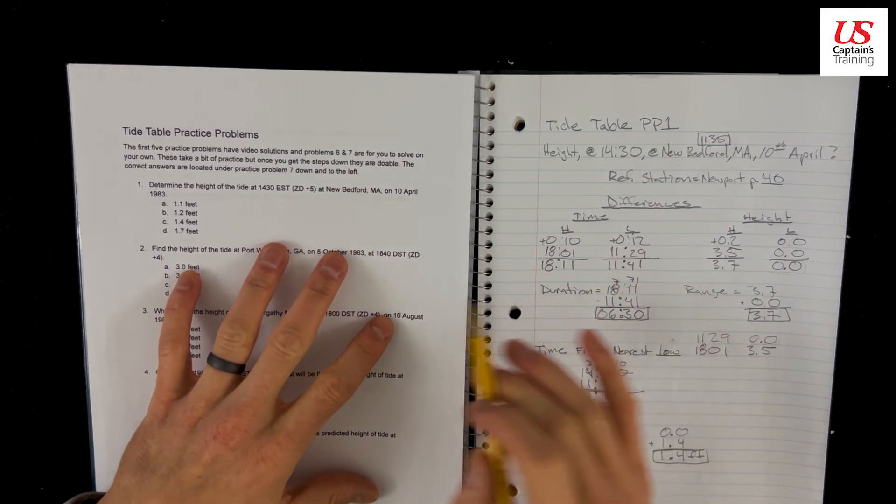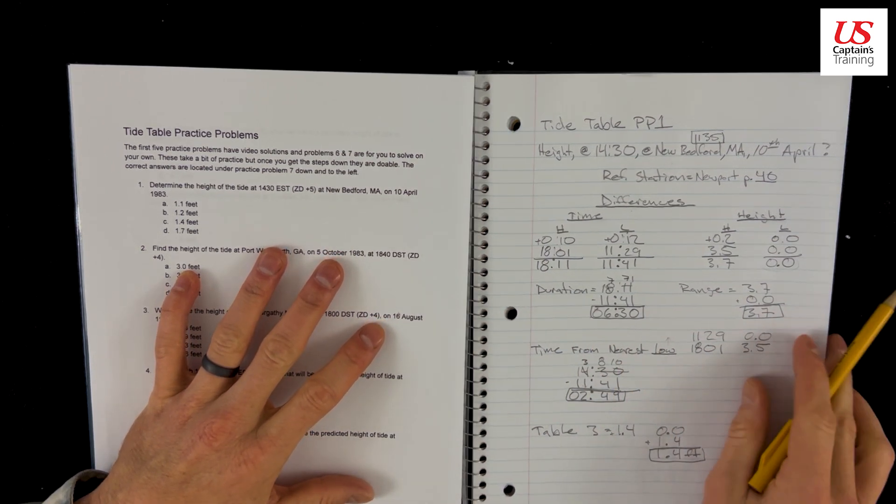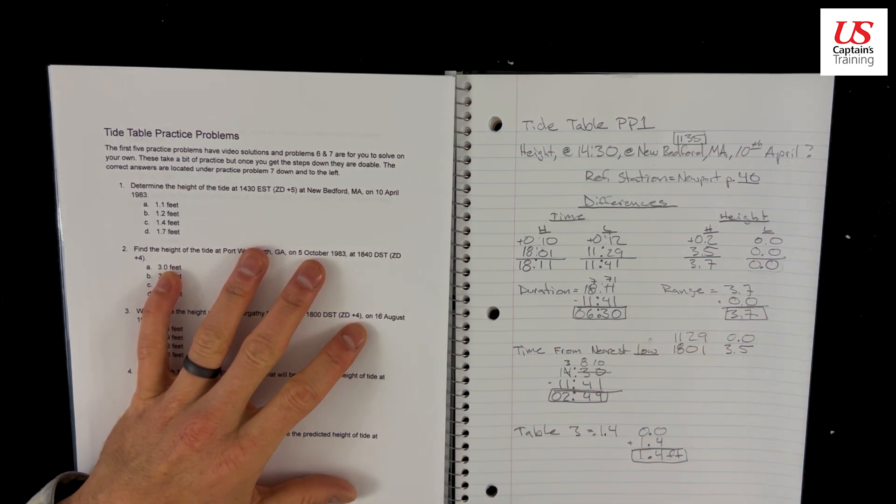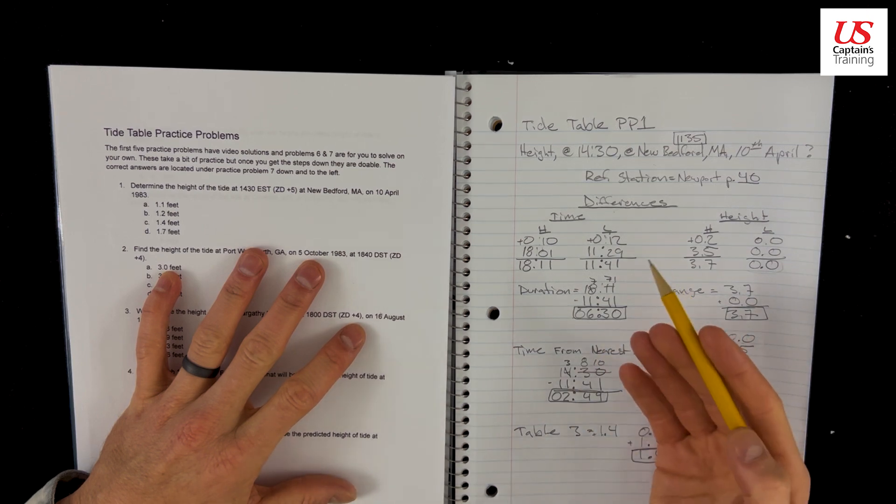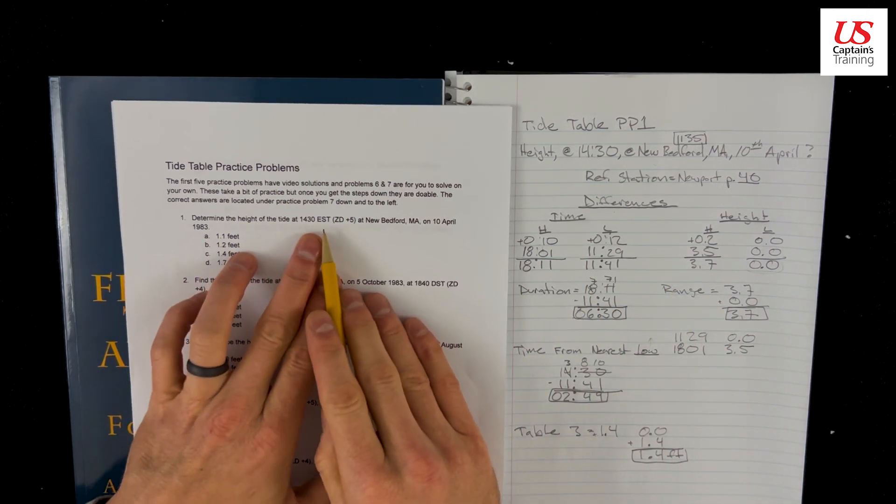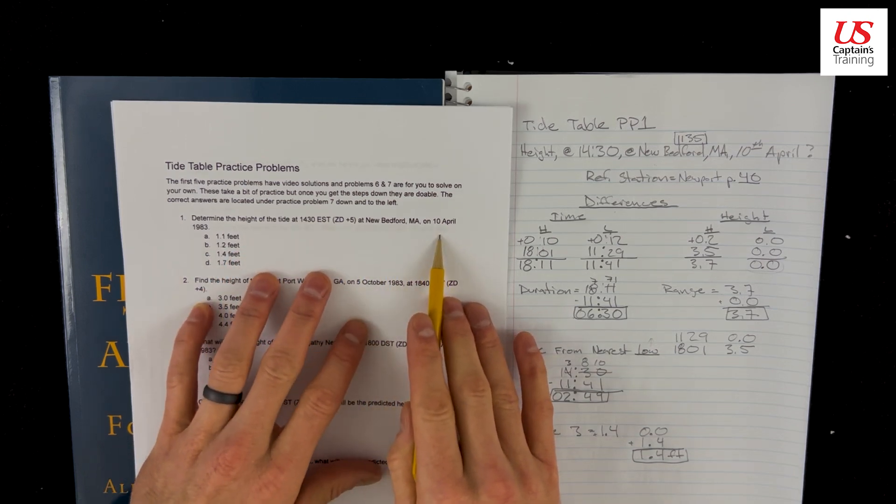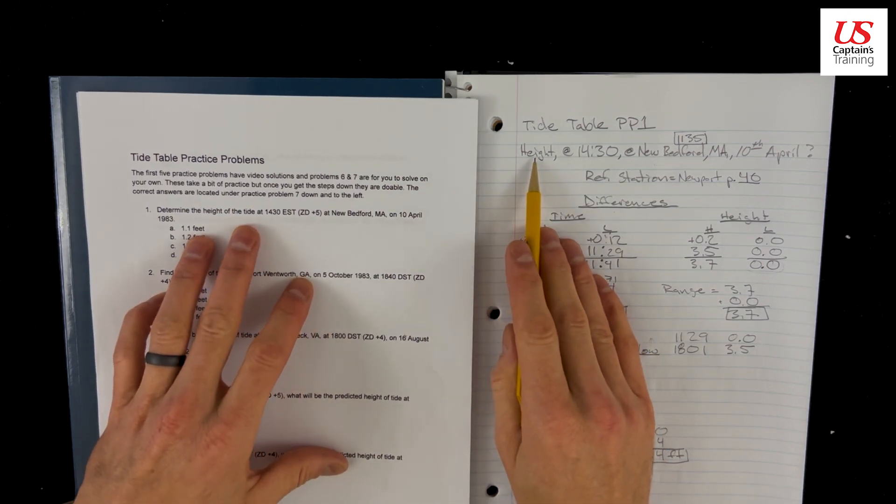Let's do an overview of these tide table practice problems. This is practice problem one, and I just want to run through the steps we use to get this answer. So first we read the problem, right? Determine the height of tide at 14:30 EST at New Bedford, Mass on 10 April. So we recorded everything we wanted.